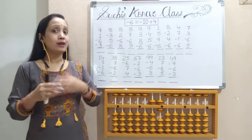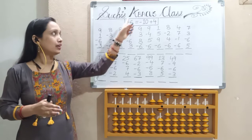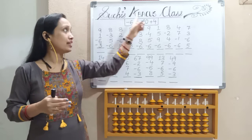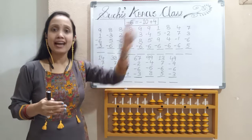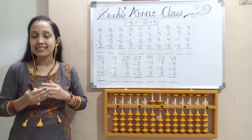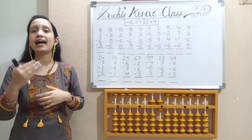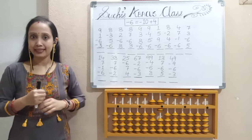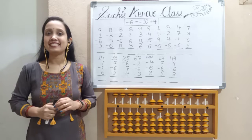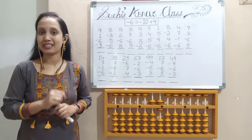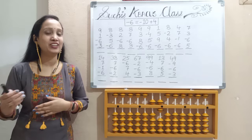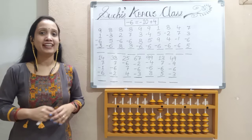So let's start. Today I am going to tell you the less 6 formula. That is less 6 is equal to less 10 and 4. As I told earlier, for less, 10 will go out and the friend will come in. If you are new to my channel, please don't forget to subscribe and press the bell icon so that whenever I upload new videos, you will get a notification.